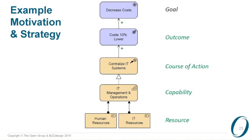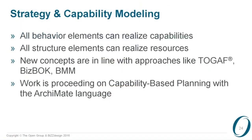You might also notice that we are using a different notation for the assignment relationship — I'll get to that later on. Strategy and capability modeling is highly important in today's world of enterprise architecture, and we have now supported that. To link this to the rest of the language, you can realize capabilities by linking them with all kinds of behavior elements — your business functions, business processes, and also the behavior of your IT systems all realize these capabilities. Likewise, all resources can be realized by all the structure elements in your architecture, from high-level business objects to IT infrastructure and the physical world. Those are all your resources — they realize the resources of the organization.